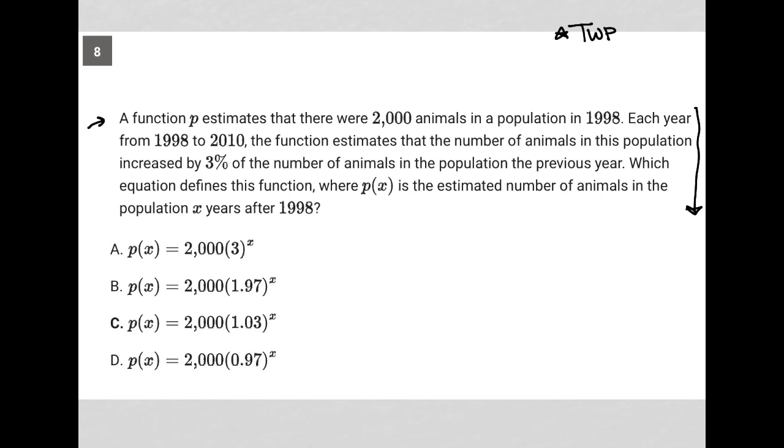The first sentence says a function P estimates that there were 2,000 animals in a population in 1998. So I'm going to write down 1998 arrow 2,000 animals. Each year from 1998 to 2010, the function estimates that the number of animals in this population increased by 3%. That means that we're going to have 1999 and that's going to be 2,000 times 1.03.